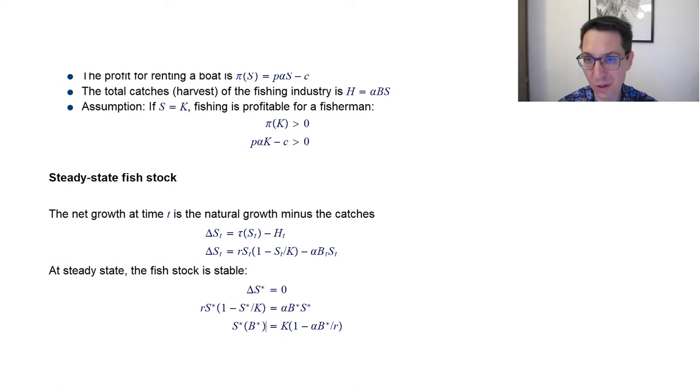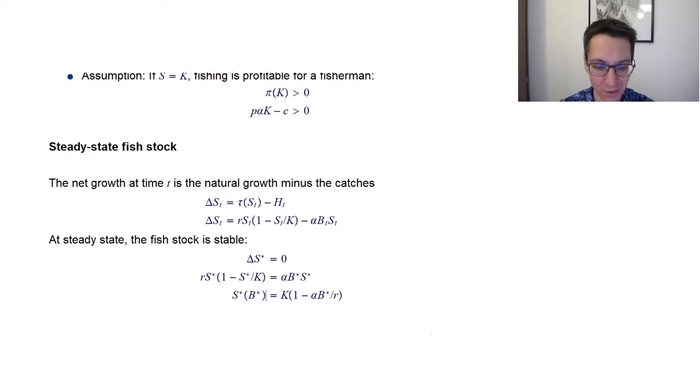And how do we interpret this? Well, it has some intuitive interpretations. So how is s related to B? Well, it's an inverse relation because there's a minus there. So the more boats are trying to fish, then the lower the stock of fish in the steady state will be. The higher the steady state quantity K, the carrying capacity is, the higher s is going to be.